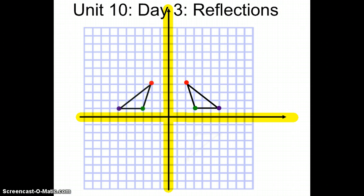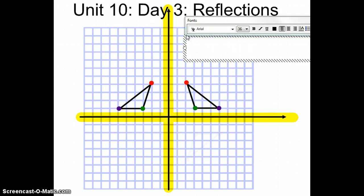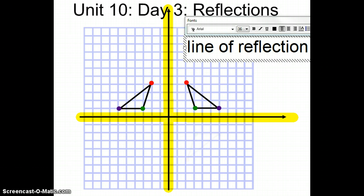Here you have a reflected shape. What I want to point out are some properties of the reflected shape. Look to see how far away the red dot is from the line of reflection. Since the line of reflection in this case was the y-axis, the red dot is actually two units away from the line of reflection. Since the red dot is two units away, its reflected image is also two units away from the line of reflection.